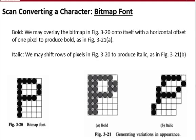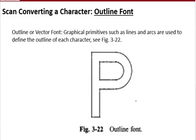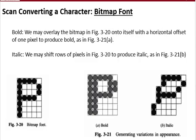In italic, the bits are arranged in an italic format to present the letter. The outline font colorizes the outlines to draw the character. The outline font is also known as the vector font, as opposed to the pixel font.